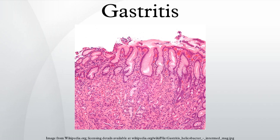Other signs and symptoms may include nausea, vomiting, belching, bloating, early satiety, loss of appetite, unexplained weight loss, and morphological patterns. Acute erosive gastritis is a gastric mucosal erosion caused by damage to mucosal defenses.